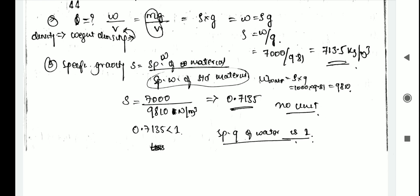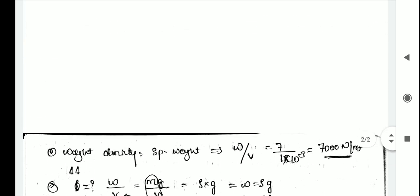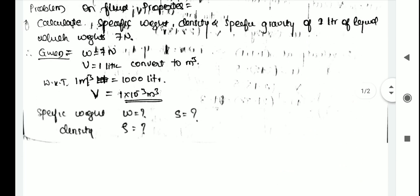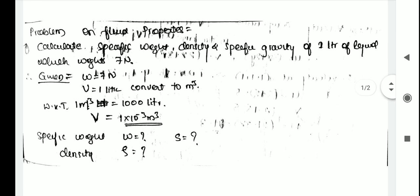The specific gravity of water is one, so our answer of 0.7135 is less than one. Thank you — this is the fluid properties problem.